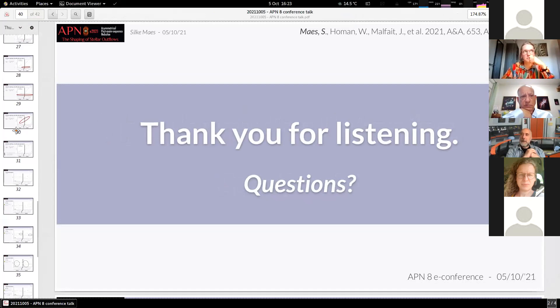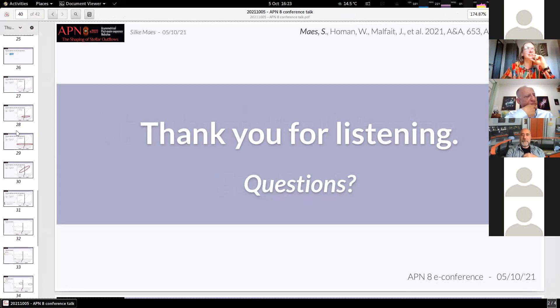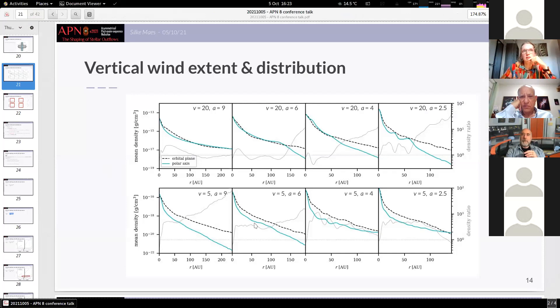That's actually a good question. We didn't really look into the ratio between the orbital plane and the polar axis, but here you can already see some ratios. But we mainly looked here at the different signatures that it leaves. But now we need to investigate more, of course, what these equatorial density enhancements are and how much it differs with the polar regions.